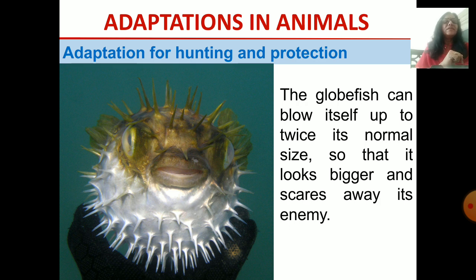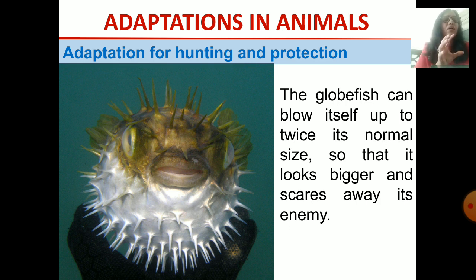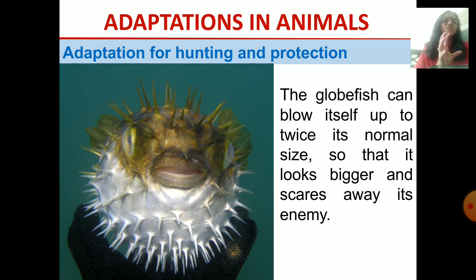Another example is the clownfish. It blows itself up to twice its normal size. It is small but it blows itself up to twice its normal size, and then it looks bigger. It can scare away its attacker because it is looking bigger. This is how it can protect itself.